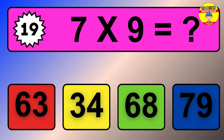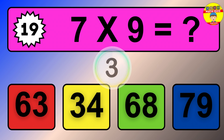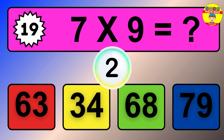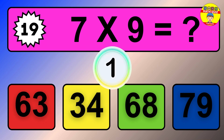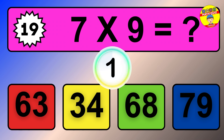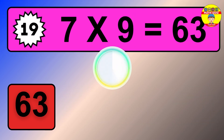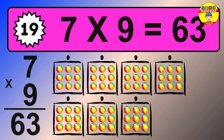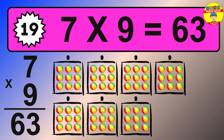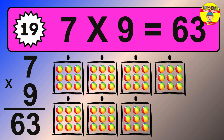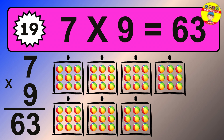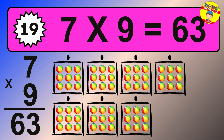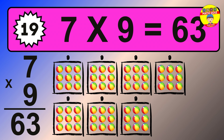Question 19. 7 times 9 equals what? The answer is 7 times 9 is 63. To calculate, we have 7 groups with 9 balls each one. So how many balls do we have? 63 balls.